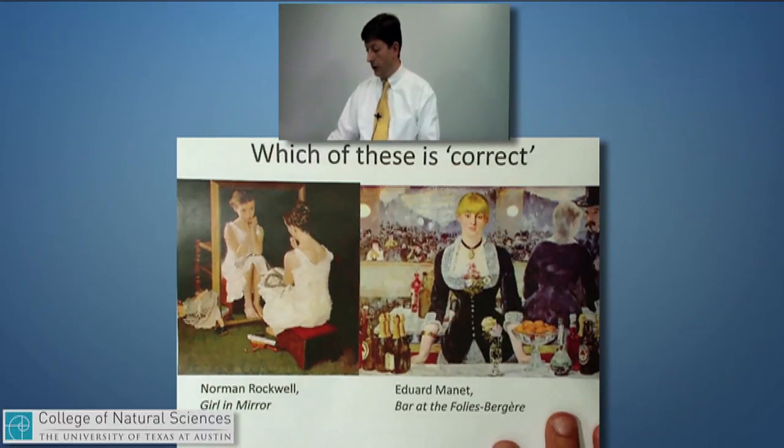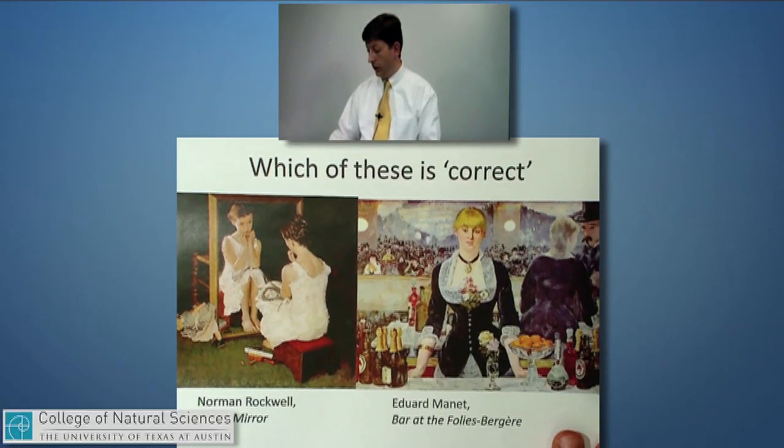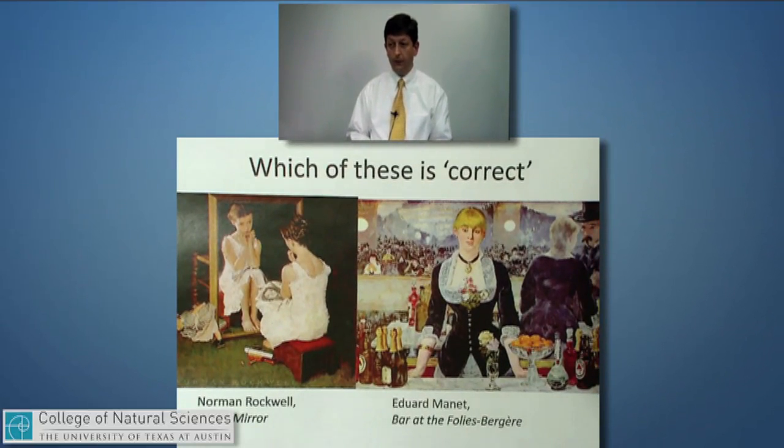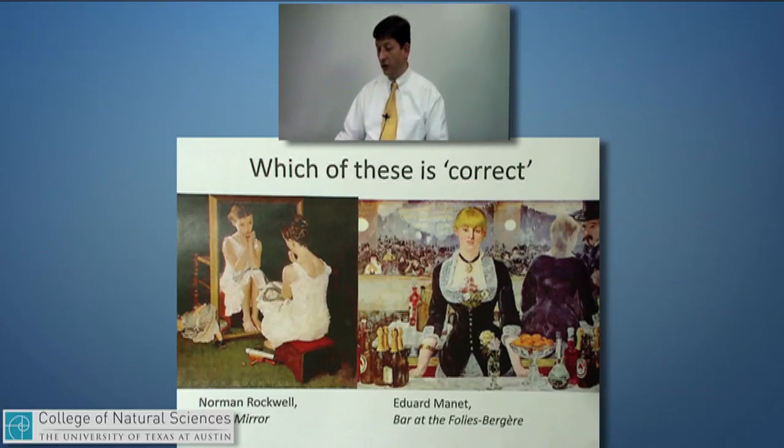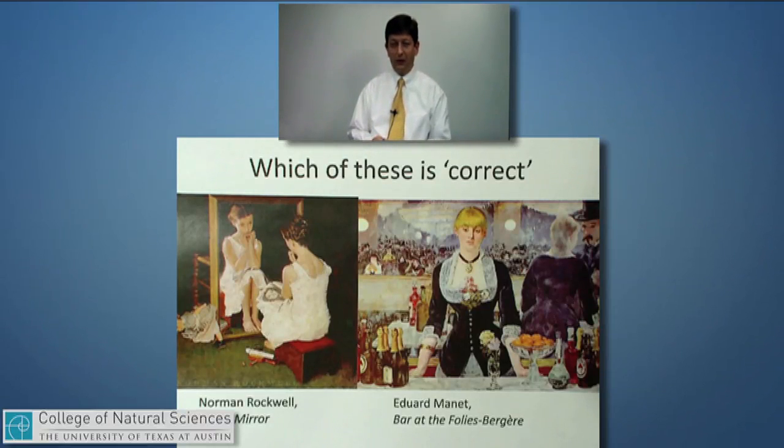Here are a couple of famous paintings, one by Edouard Manet and one by Norman Rockwell. And both of them tried to draw an image inside of a mirror. And I can tell you that one of the artists here more or less has his optics correct and the other does not. And one of them was able to use the law of reflection quite accurately and the other didn't quite get it right.